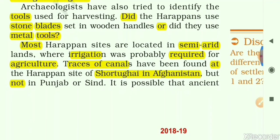Most Harappan sites are located in semi-arid lands where irrigation was probably required for agriculture. The Harappan civilization existed mainly in the western part of India and modern Pakistan — Harappa and Mohenjo-daro are located in what is now Pakistan. Traces of canals have been found at the Harappan site of Shortugai in Afghanistan, but not in Punjab or Sindh, as the civilization did not recognise modern country boundaries.